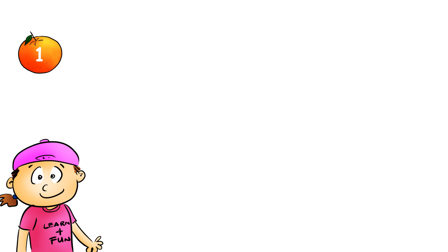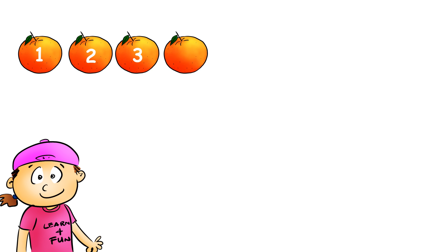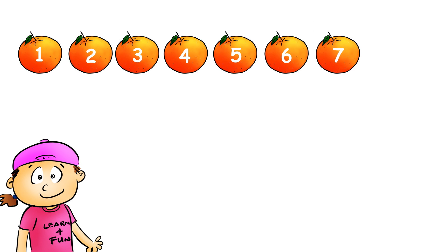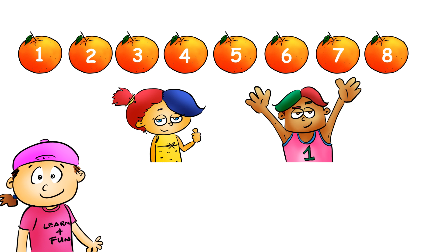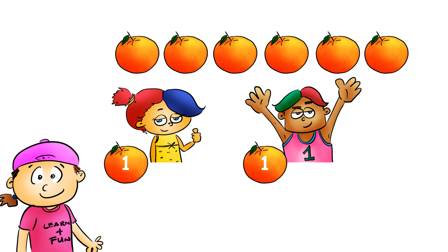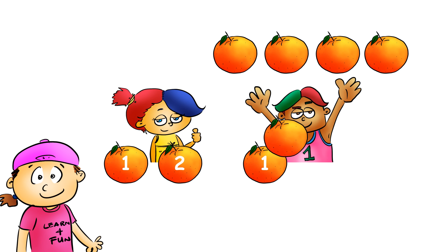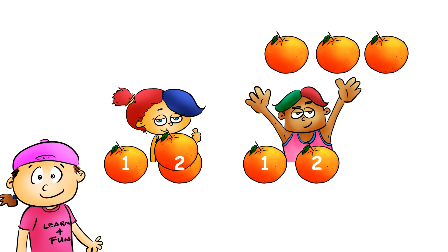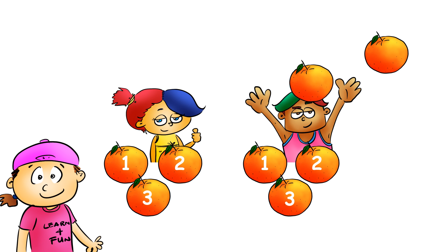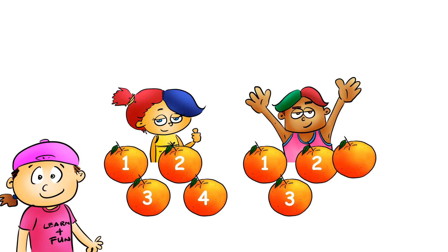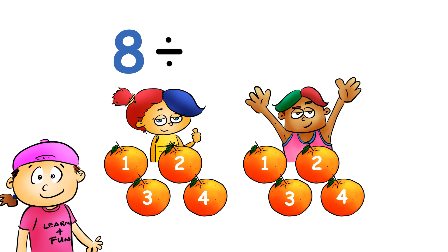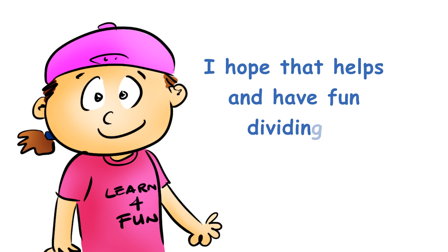So you have one, two, three, four, five, six, seven, eight oranges. Then you have you and your friend. One for you, one for your friend, another one for you, another one for your friend, another one for you, another one for your friend, another one for you, and another one for your friend. So you and your friend each have four oranges. So eight divided by two is four. I hope that helps and have fun dividing!